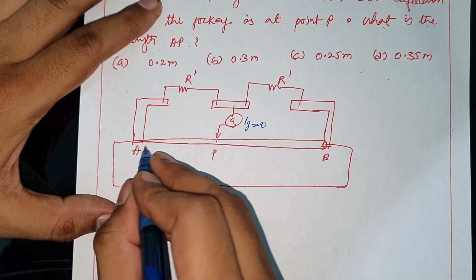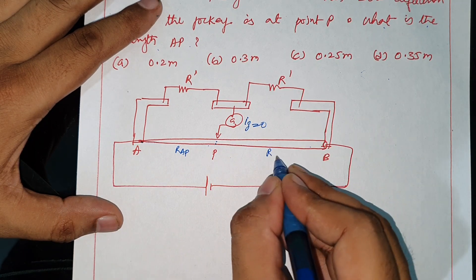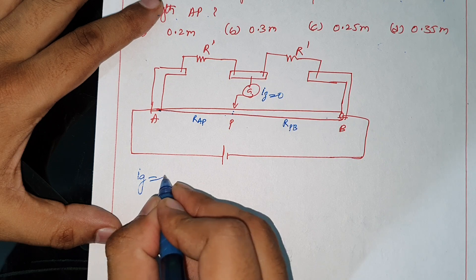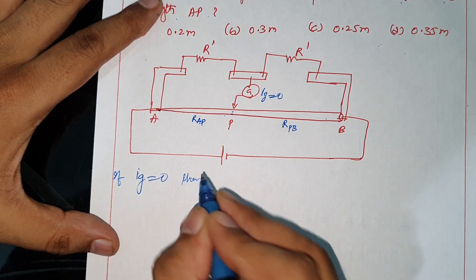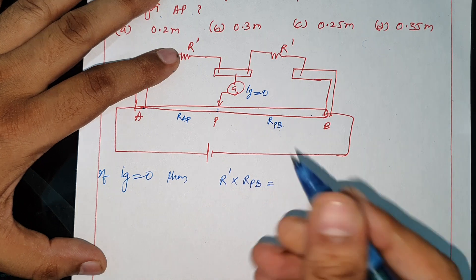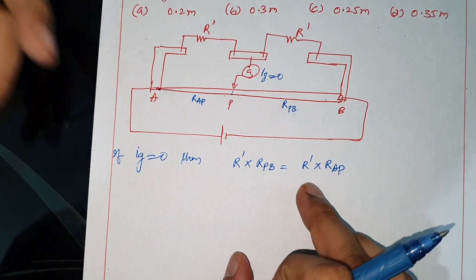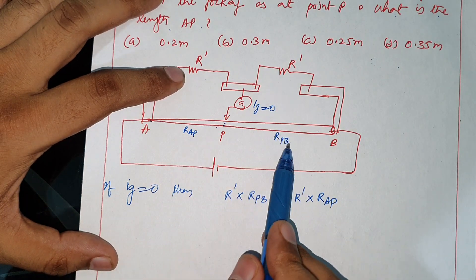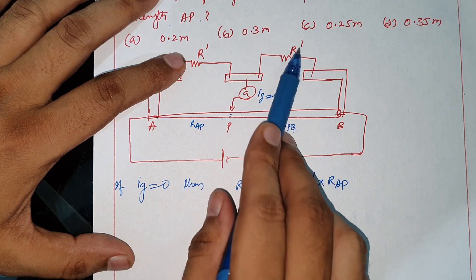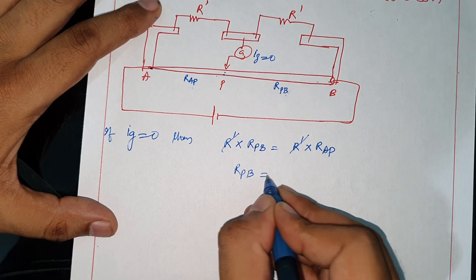You'll need to integrate. Look at this wire AP with resistance RAP. For a balanced Wheatstone bridge with IG zero, the meter bridge is based on the balanced Wheatstone bridge condition. If IG is zero, then R dash times R_PB equals R dash times R_AP. Dividing both sides by R dash, we get R_PB equals R_AP.